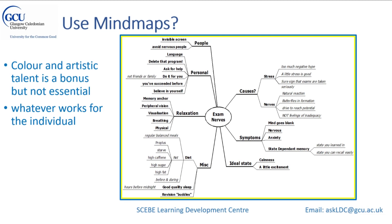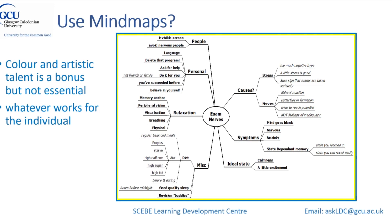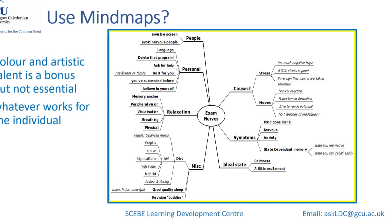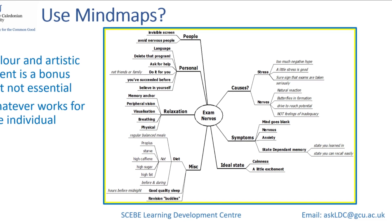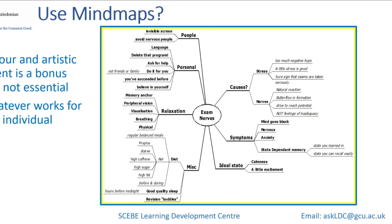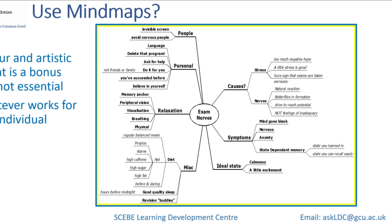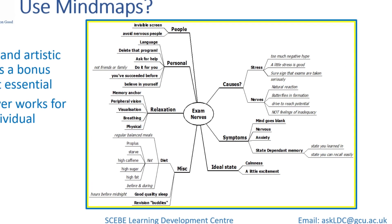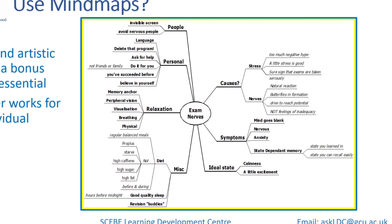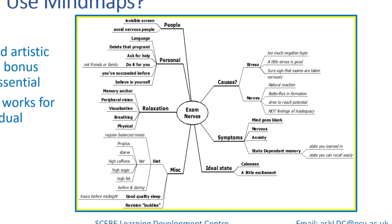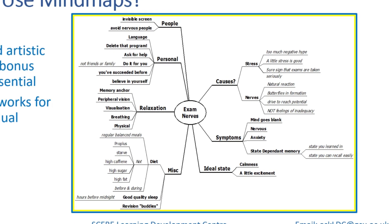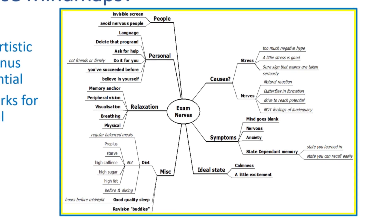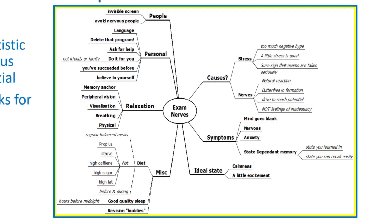Here's a very basic bit of mind map software I use. Starting with 'exam nerves' in the centre, I put branches out: causes, symptoms, ideal state, miscellaneous, relaxation, personal, people — and expand from there. Causes branch to stress and nerves, and so on. You can add short sentences and bullet points. Very quickly you can summarise an entire subject on a single A4 page. As a student at Glasgow Caledonian University you have access to AppsAnywhere, which includes MindGenius — a terrific mind mapping tool worth checking out.